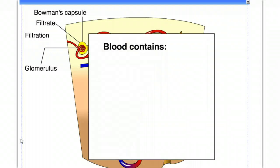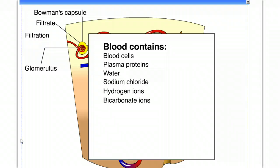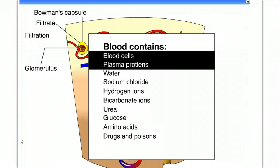Blood contains blood cells, plasma proteins, water, sodium chloride, hydrogen ions, bicarbonate ions, urea, glucose, amino acids, and possibly some drugs and poisons. Blood cells and plasma proteins stay in the blood. They are just too big, but all the other substances are filtered from the blood and form the filtrate that accumulates in the nephron tubule.